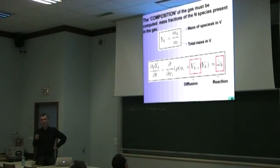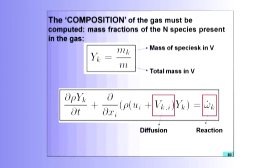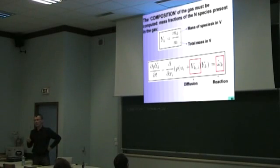As I said, the mass fraction of oxygen, for example, today in this room must be of the order of 23%. Now, the problem is that I need this yk here for all the species in my gas. So if I have 3,000 species, I need 3,000 mass fractions. That means I will need to solve for 3,000 more equations.